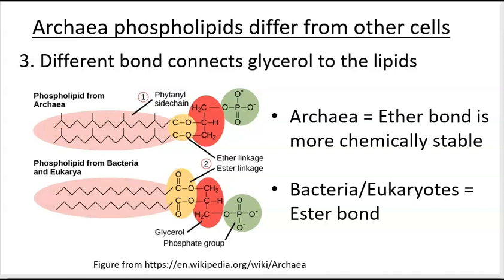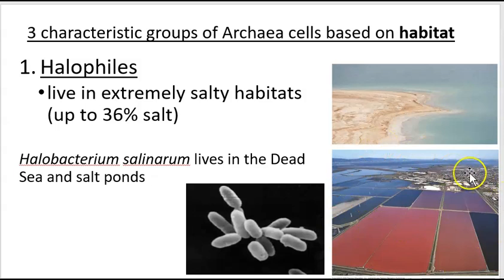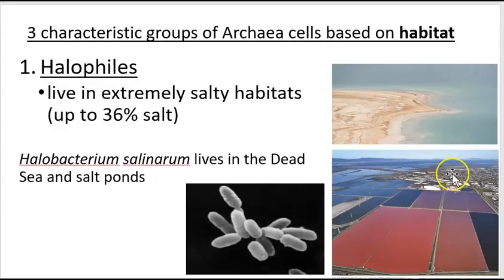Looking at where archaea grow, we can divide them based on habitat. One environment is halophilic — halo from Greek for salt. Halobacterium lives in places like the Dead Sea in environments up to 36% salt. Salt evaporation ponds near the Oakland and San Francisco airports host these archaea, which produce a pigment involved in absorbing light, giving the ponds their purple color.